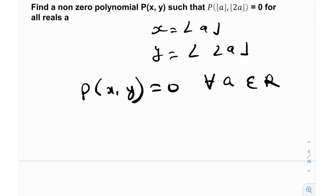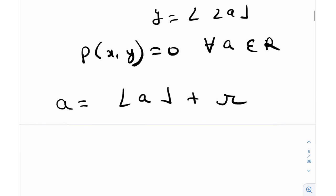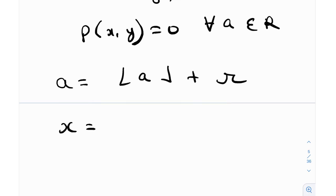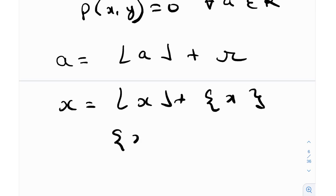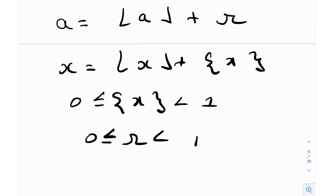Let's start with some basics. Any real number a can be written as the greatest integer function of a plus the fractional part of a, which I'll call r. So a = ⌊a⌋ + r, where r is the fractional part of x, belonging to [0, 1) — zero included and one excluded. So effectively r is between 0 and 1.